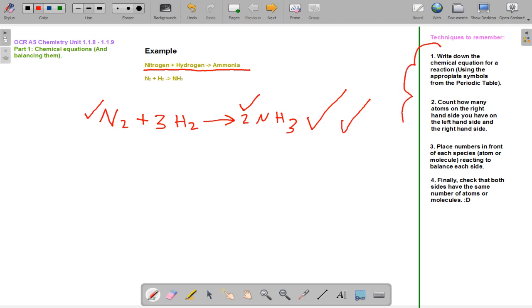A good set of techniques to remember when balancing equations in exams is to write down the chemical equation for the reaction using the appropriate symbols from the periodic table. Count how many atoms on the right hand side you have and on the left hand side. Place the numbers in front of each species, an atom or molecule reacting to balance each side.